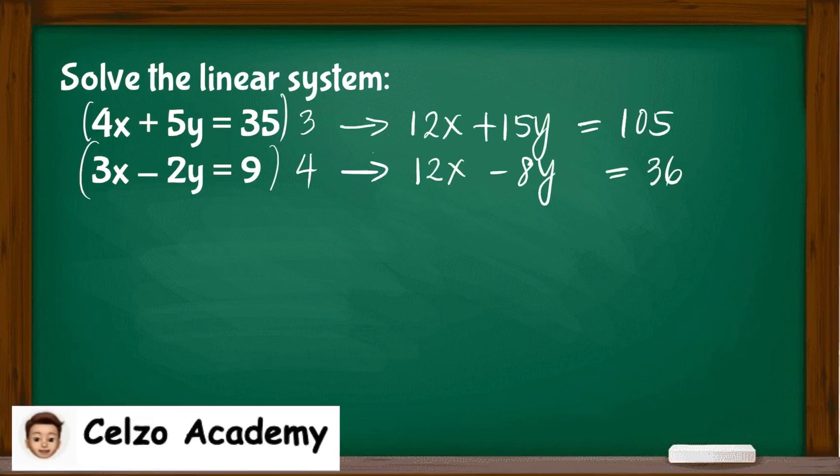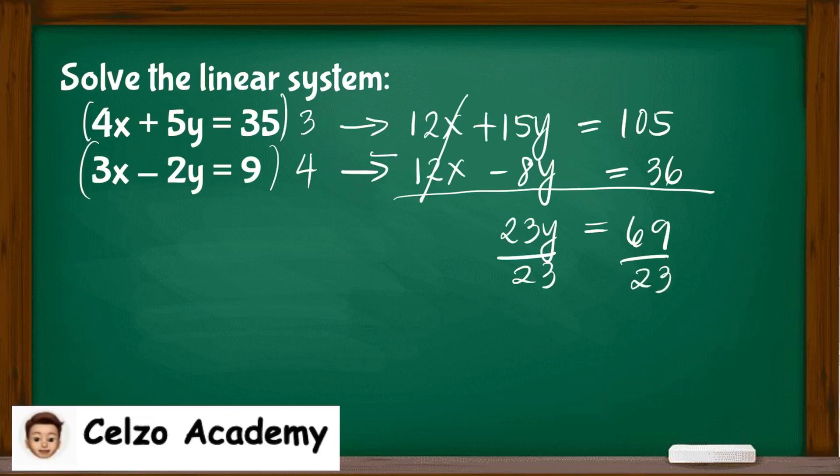Now we need to subtract the second equation from the first equation. 12x minus 12x is 0. 15y minus negative 8y is 23y, equal to 105 minus 36, which is 69. Now we can divide both sides by 23, so y value is 3.